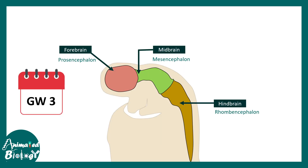Now let us quickly look at some terminology. At around gestational week 3, this is the basic blueprint of the brain. The red portion is known as the forebrain or prosencephalon, the green portion is known as the mesencephalon, and the yellow portion is known as the hindbrain or rhombencephalon. This is the broad demarcation of the three regions in the brain.